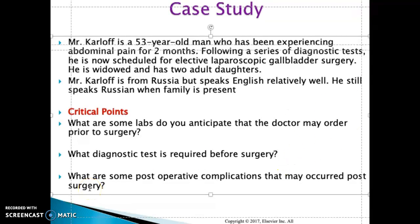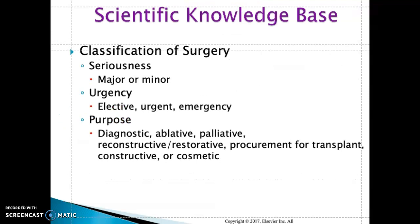What are some post-operative complications that you can anticipate? There are many complications that can occur after surgery. DVT, deep vein thrombosis, can occur due to lack of mobility, and the patient may develop a clot. Electrolyte imbalance, nausea, vomiting, and dehydration are also common post-operative complications that can occur.